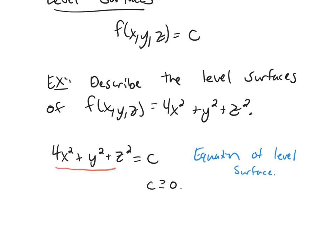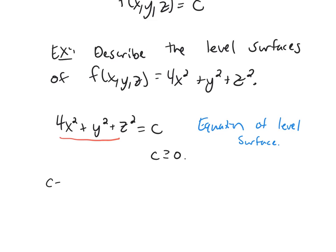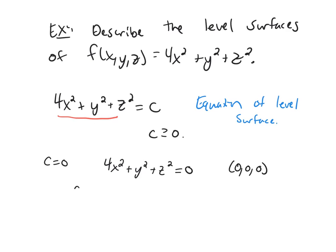Let's start with C equal to zero. If C is equal to zero, I'm looking at 4x squared plus y squared plus z squared equals zero. And the only solution we get is the point (0, 0, 0). So C equals zero corresponds to just the single point being the origin.